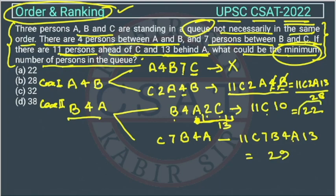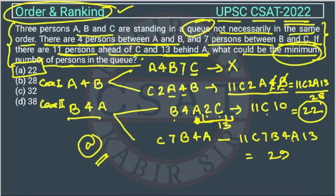So the minimum number of persons in the queue is 22, and the answer to this question is Option A. I hope you understood it. I tried to explain it in the best possible way. You can now solve similar exam questions.